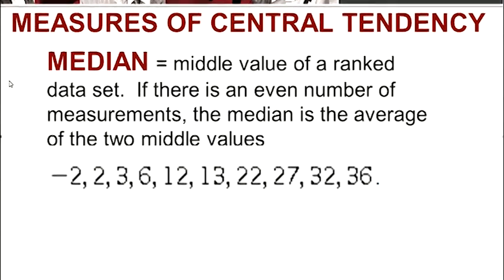Now, the second measure of central tendency is the median. The median is the middle value. And in order to find a middle value, you basically have to rank your data.